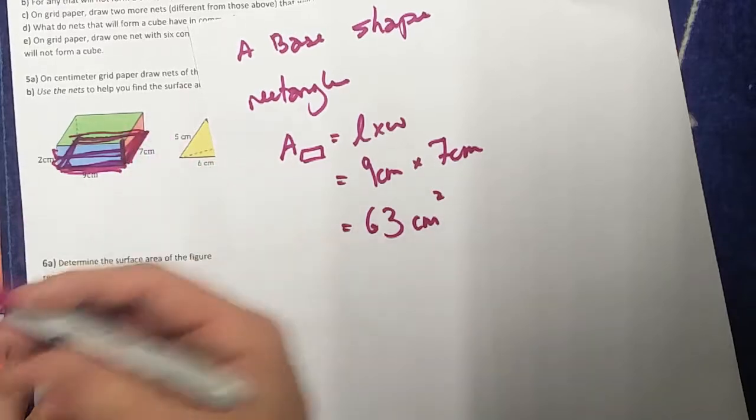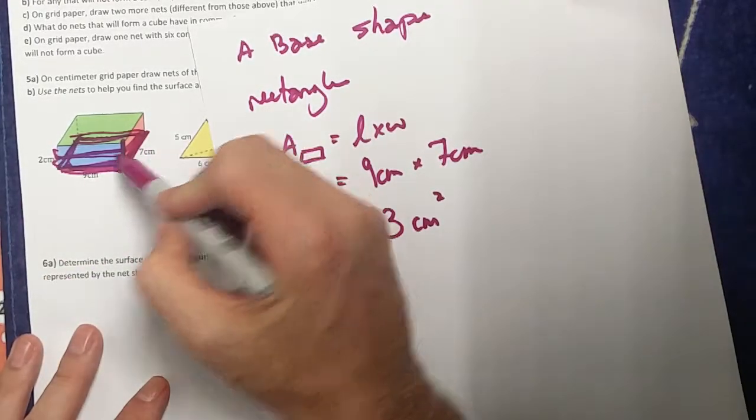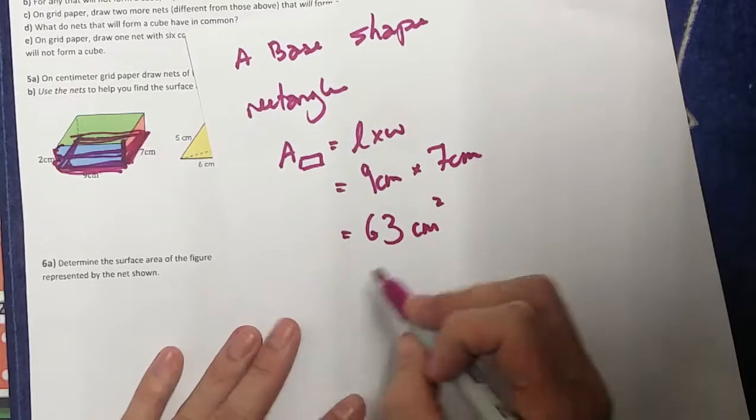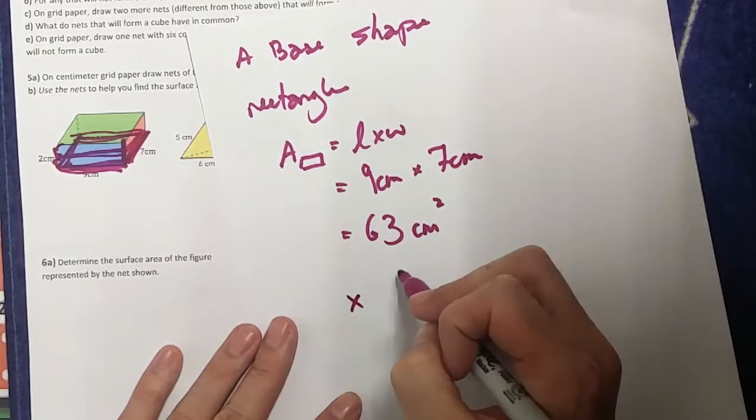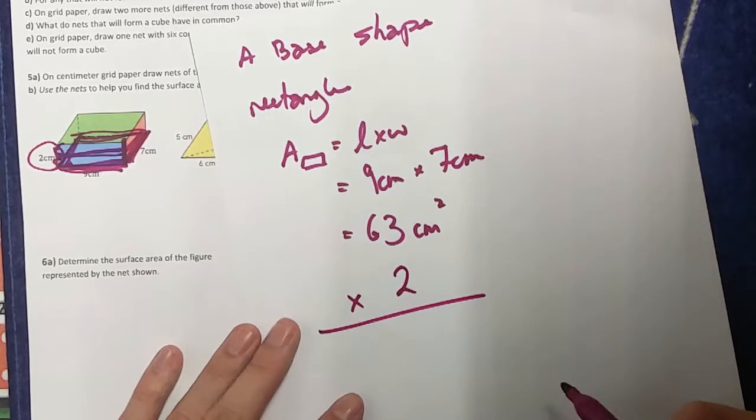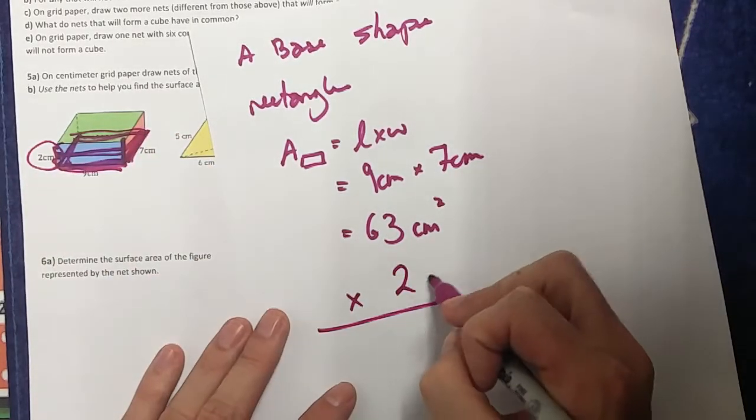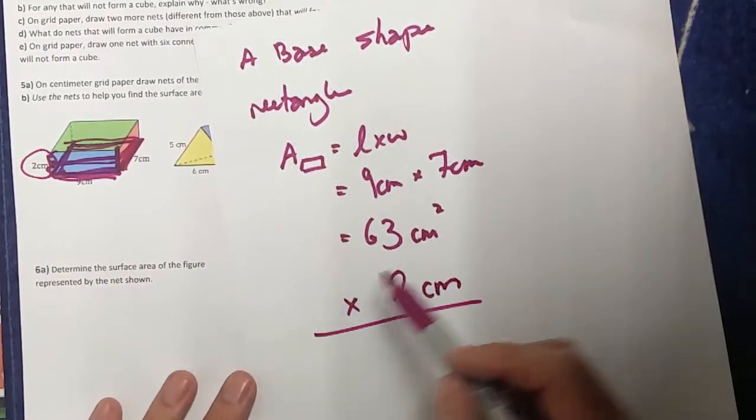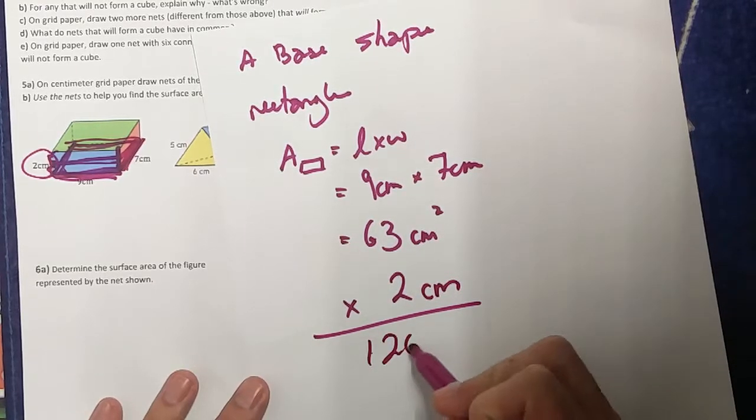But I'm not done yet. To find the volume, I have to know, well, this base shape, that base square here, is 63. Well, how many times do I have that 63? I have it one time, two times. So I actually have the area. I have to multiply it by the height. The height here, which is 2.